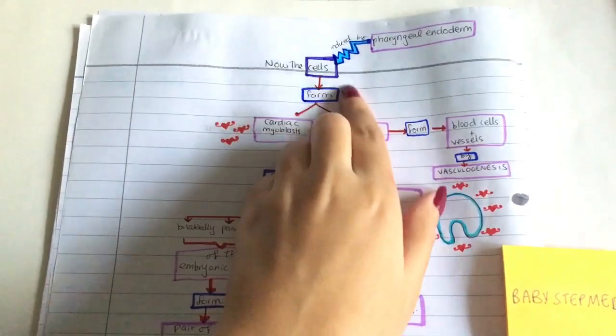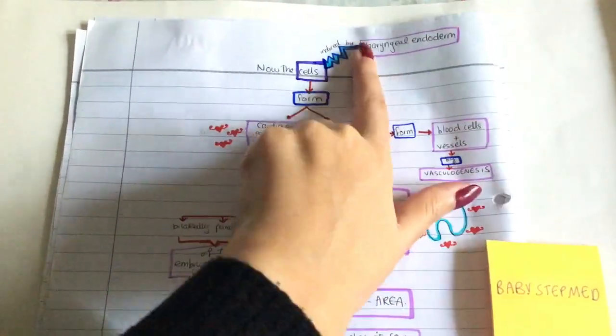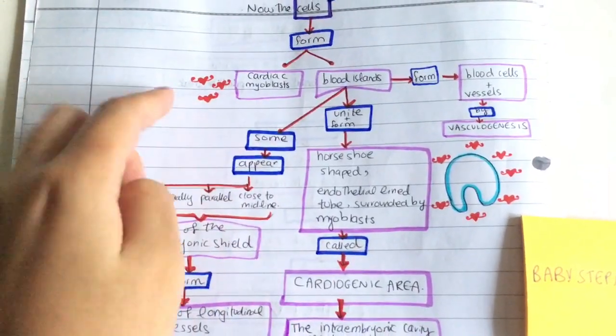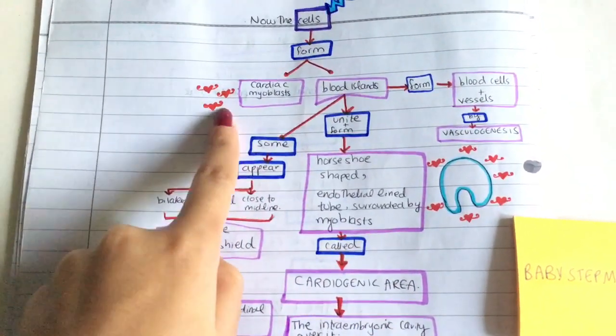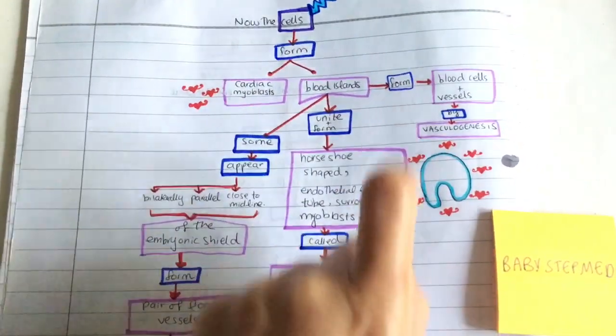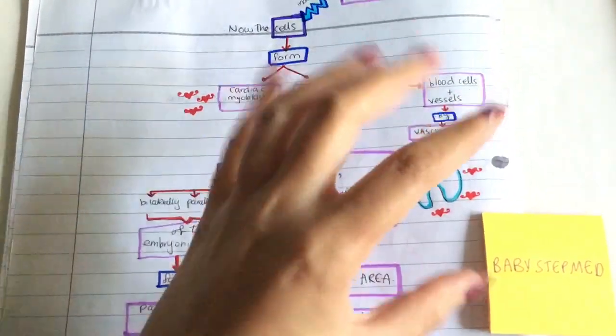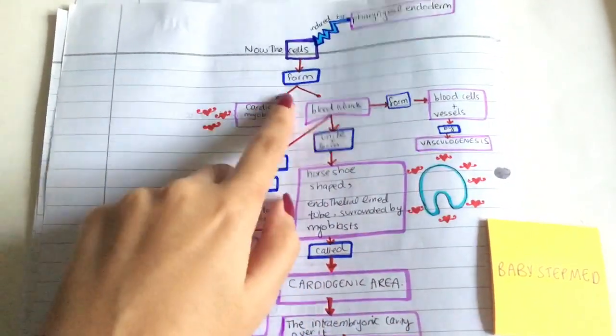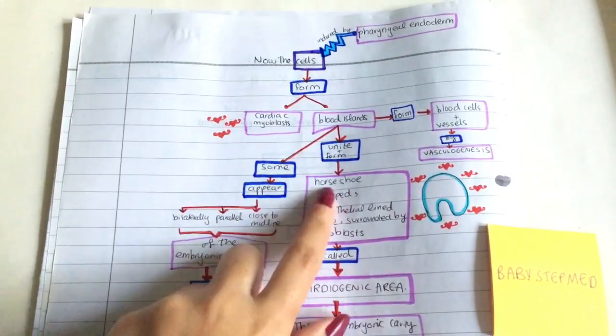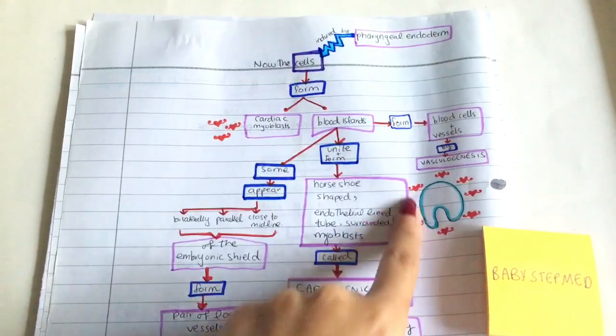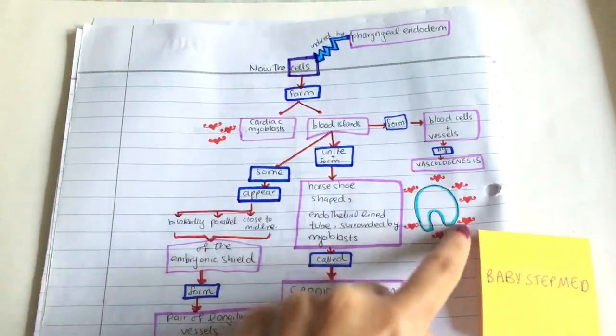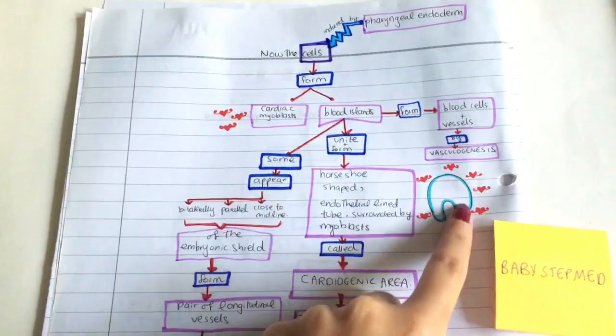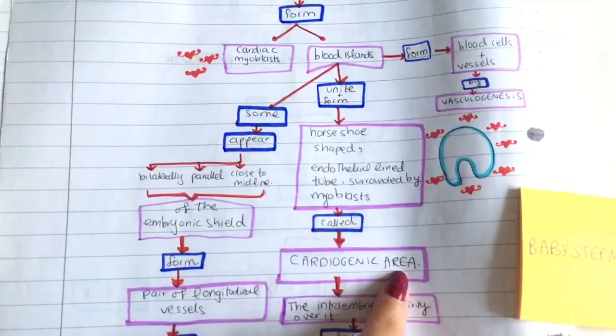The cells are induced by the pharyngeal endoderm, and they form two things: cardiac myoblasts and blood islands. The blood islands form together and form the blood cells and blood vessels by vasculogenesis. The blood cells unite and form a horseshoe-shaped endothelial line. As you can see, we have a horseshoe shape lined by endothelium in the blue, surrounded by myoblasts. We call this area the cardiogenic area.